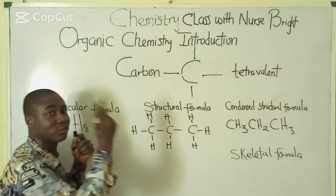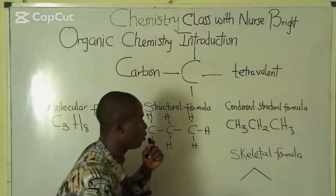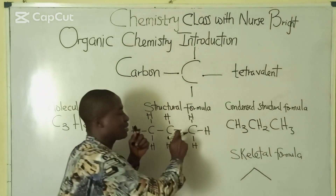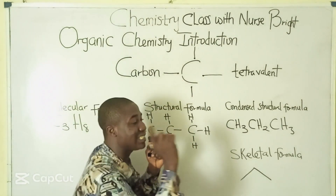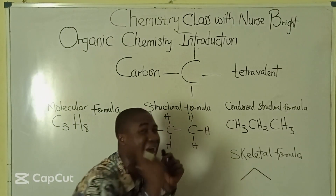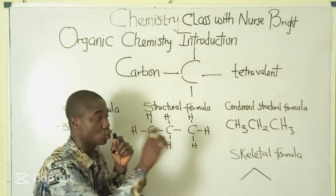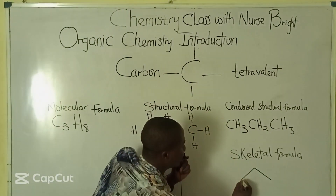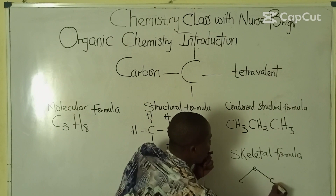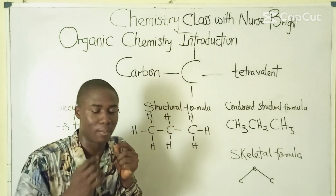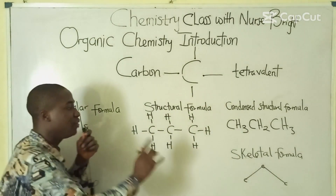Since we are having three carbons, we are drawing two lines. The skeletal formula is drawn as two connected lines. At each junction we have a carbon atom. So at this junction we have one carbon, at the next junction another carbon, and at the last junction another carbon atom — giving us three carbon atoms total, matching our molecular formula.